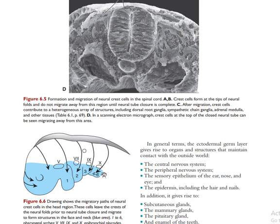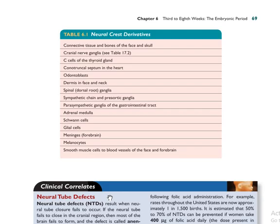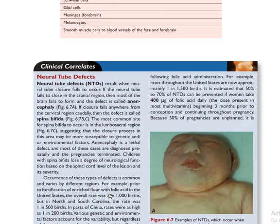All muscles and sensations of the first pharyngeal arch are innervated by cranial nerve V (trigeminal). All muscles and sensations of the second pharyngeal arch are innervated by cranial nerve VII (facial). The third pharyngeal arch is innervated by the glossopharyngeal nerve. The fourth to sixth pharyngeal arches and their sensations are innervated by the vagus nerve.